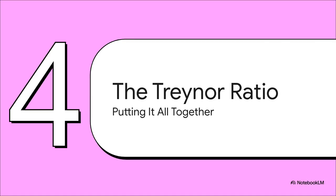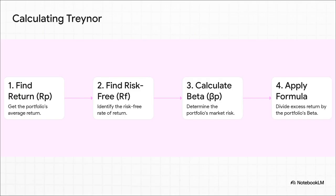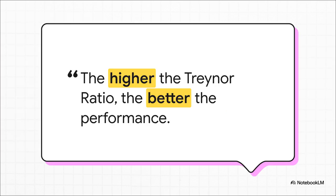Now that we've got a solid handle on beta, we can put all the pieces together and see how the Treynor ratio actually works. It's actually pretty simple: we take the portfolio's excess return — that's just the profit you made above what you'd get from a super safe investment — and we divide it by its beta. The result tells you: for every single unit of market risk I decided to take on, how much extra return did I actually get? You just need three things: your portfolio's average return, the current risk-free rate, and that all-important beta. A higher value is always better — it means you're getting a greater reward for each unit of market risk you've accepted.